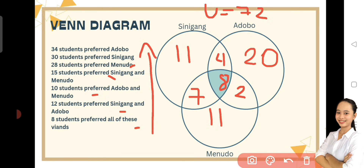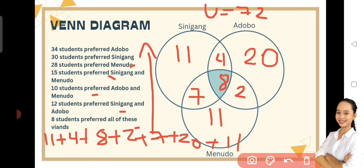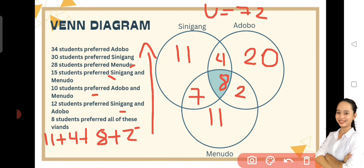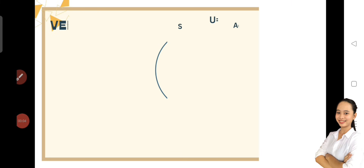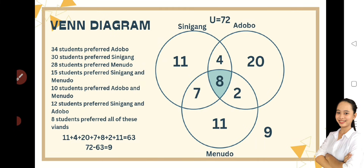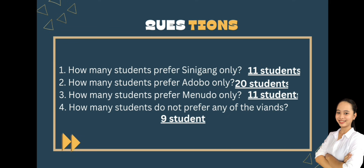Ngayon naman, ang ipag-a-add natin silang lahat. So, 11 plus 4 plus 8 plus 2 plus 7 plus 20 plus 11 is equals to 63. So, yung 63 na total na yan, i-minus natin yan sa Universal, which is yung 72. 72 minus 63 is equals to 9. So, 9 yung students na wala yung gusto nila sa mga Sinigang, Adobo, at Menudo.